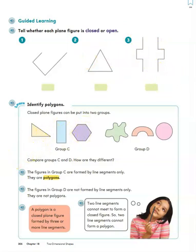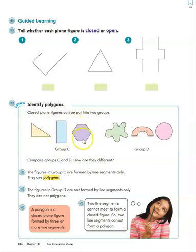Moving on to polygons. Polygons are a special type of plane figure that are made up of line segments. So in our last chapter, chapter 17, we learned all about line segments. If we have any shape made up of line segments — like this triangle here, or this rectangle, or this hexagon that looks like it has six sides — and they are all straight lines, those are polygons.